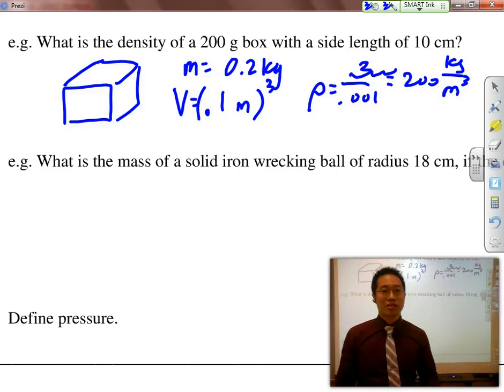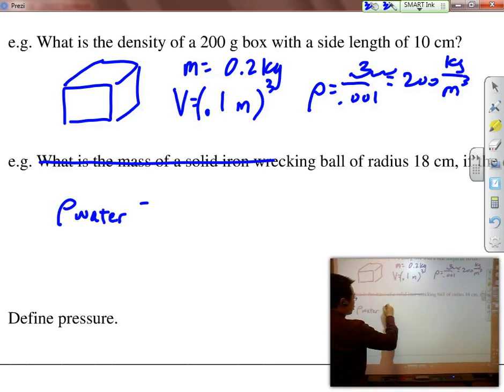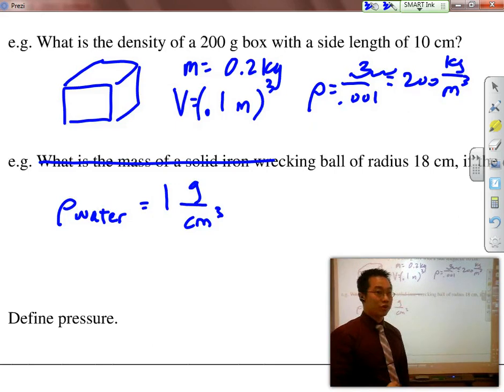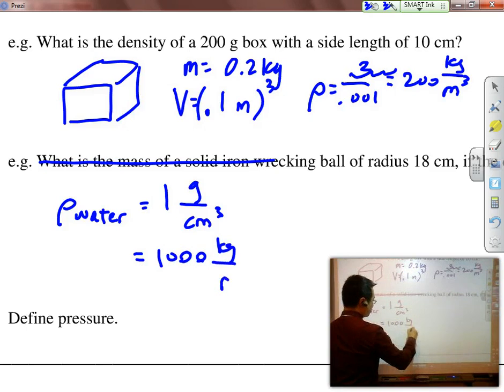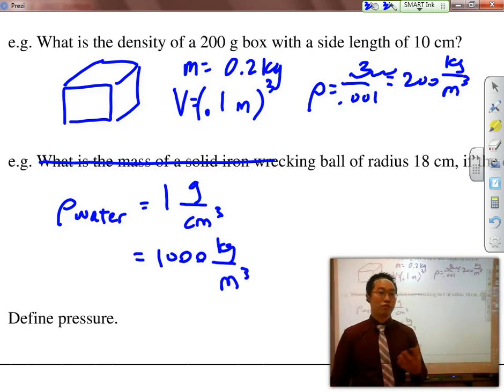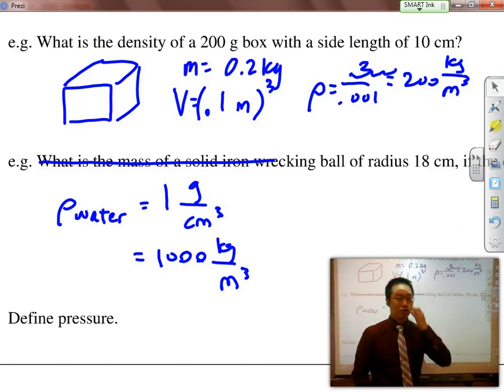The only density that you need to memorize is the density of water. In chemistry, you learn it to be 1 gram per centimeter cubed. For physics, however, we don't use grams or centimeters, so it's going to be 1,000 kg per meter cubed, which means that this box above will float on top of the water.